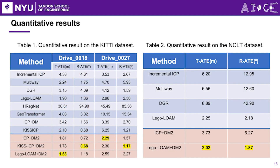Quantitative results of the DeepMapping 2 approach on the KITTI and NCLT datasets are shown below. The results demonstrate the adaptability of DeepMapping 2 to different types of initialization methods. We observed that our method achieved the best result among compared baselines, and notably, the level of improvement varies depending on the specific initialization method used.